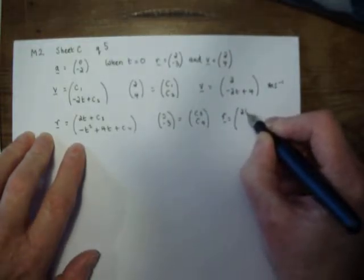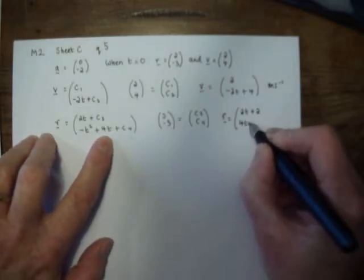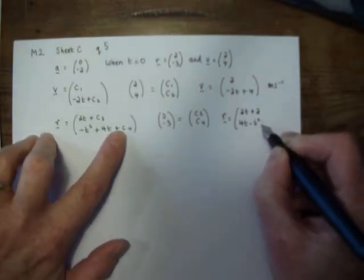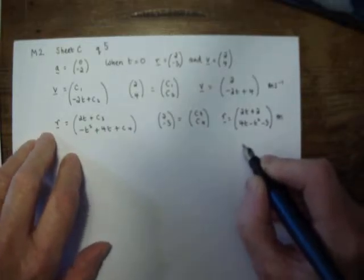So we have an expression for r, which is 2t plus 2, and tidying this up a little bit, 4t minus t squared minus 3 is the displacement vector.